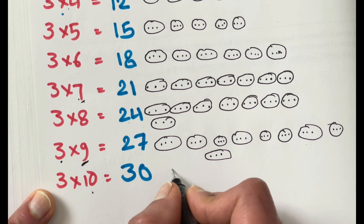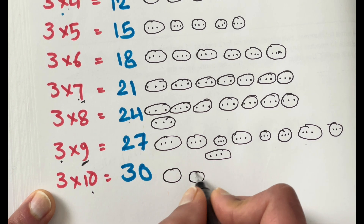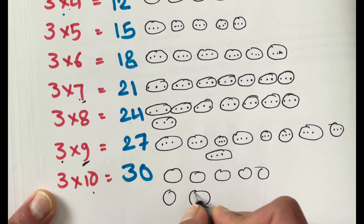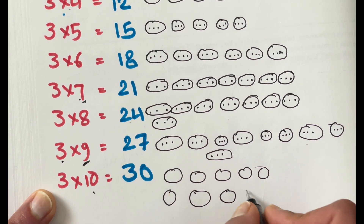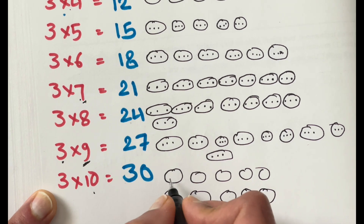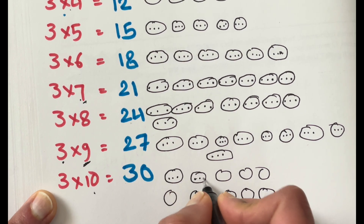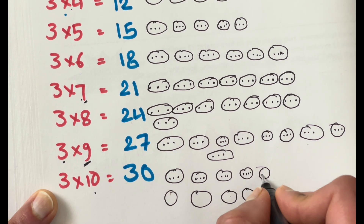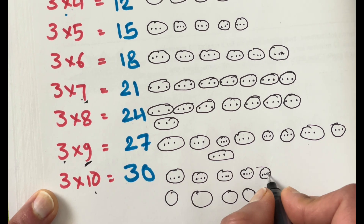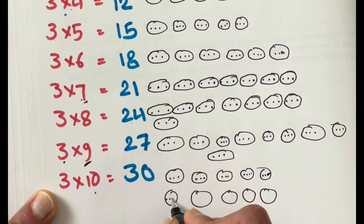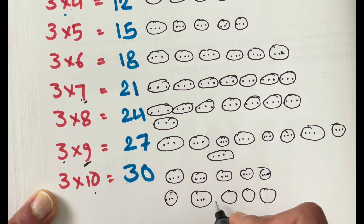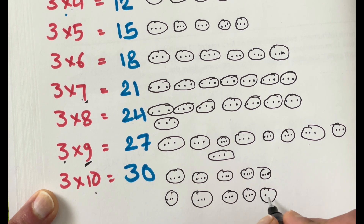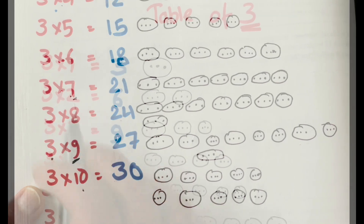That means ten groups of three make thirty. Four, five, six, seven, eight, nine, and ten groups of three: six, nine, twelve, fifteen, eighteen, twenty-one, twenty-four, twenty-seven, and thirty.